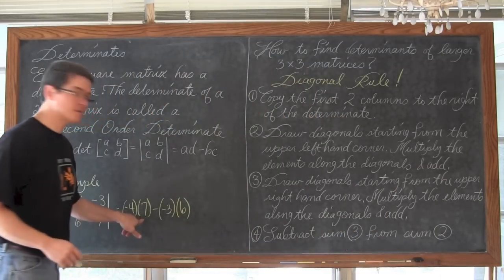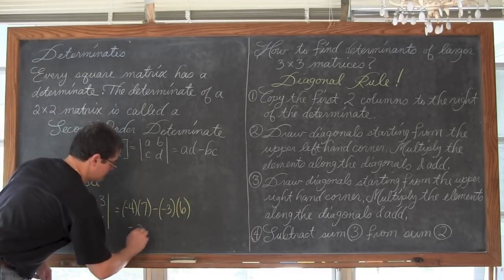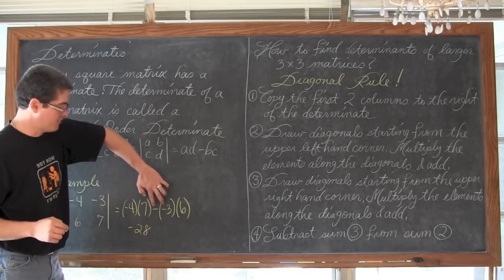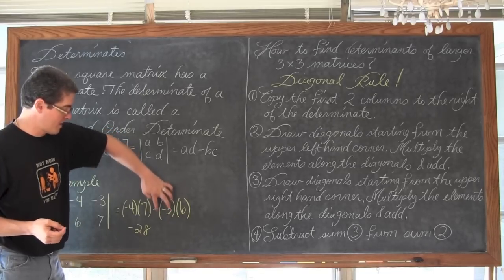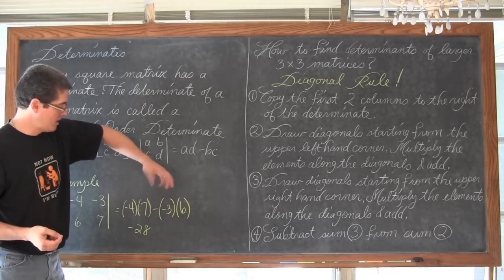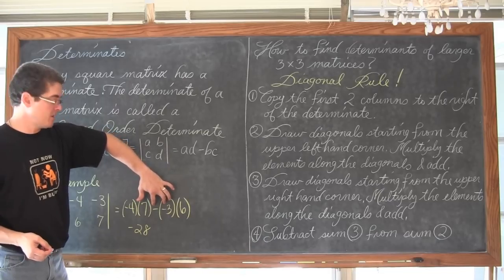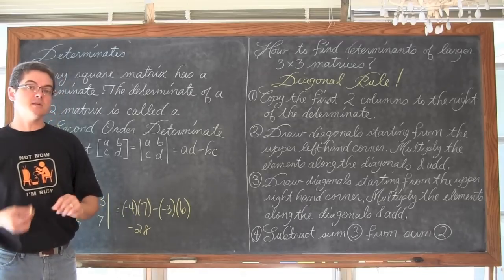So use those parenthesis every time you do substitution. So we have negative 4 times 7 is negative 28, and then a negative times a negative is positive. So negative 1 basically, we can't represent a negative 1 there, we just don't have to write it. So negative 1 times negative 3 is positive 3, and then positive 3 times 6 is 18.